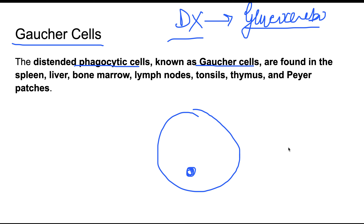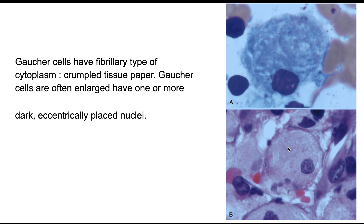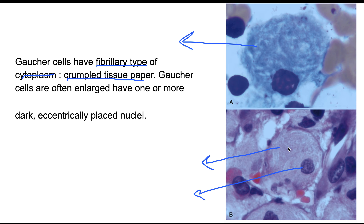Gaucher cells are distended phagocytic cells with deposition of glucocerebrosides. In the cytoplasm, they have a characteristic appearance resembling crumpled tissue paper — a fibrillary type of cytoplasm. This crumpled tissue paper-like appearance is very classical of Gaucher cells. They are mostly enlarged compared to normal phagocytes and have an eccentrically placed nucleus.